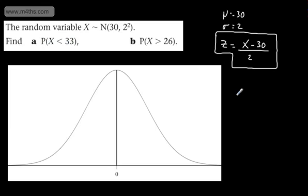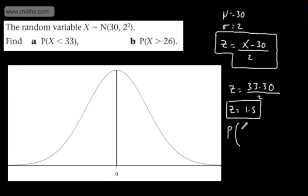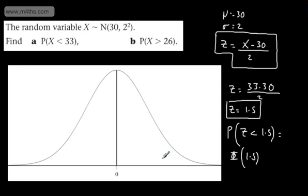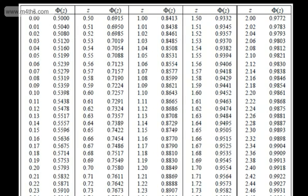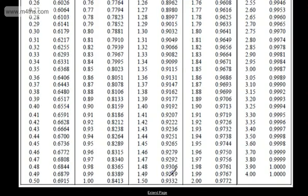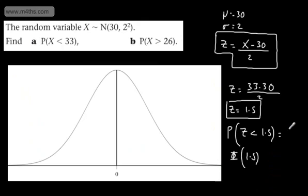Part A: we plug in x equals 33. So z equals 33 minus 30 divided by 2, which gives z equals 1.5. Therefore we want the probability that z is less than 1.5, which is Phi of 1.5. Looking this up in the standard normal table, Phi of 1.5 equals 0.9332.